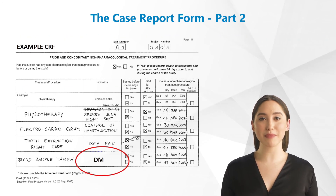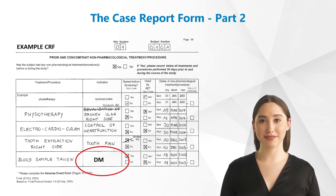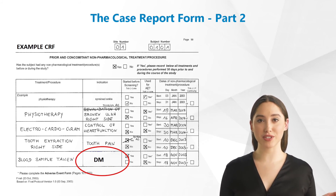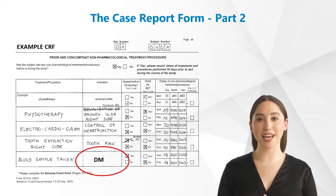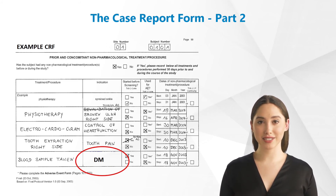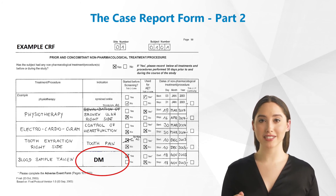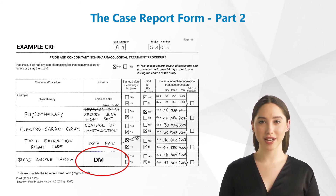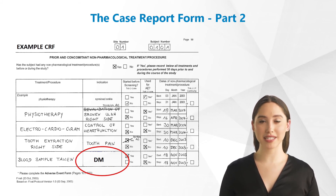Here is an example of the CRF page in Module 5, on which the non-pharmacological treatments and procedures are required. As you can see, physiotherapy, as well as ECG and dental treatments are listed. Please note that actions must also be listed here. This is vital in the collection of laboratory data connected to the control of concomitant diseases.